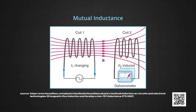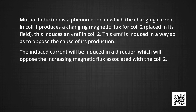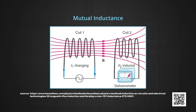An electric current can be induced in a coil by flux change produced by another coil in its vicinity. This is called mutual inductance. Mutual induction is a phenomenon in which changing current in coil 1 produces a changing magnetic flux in coil 2 placed in its field, which induces an EMF in coil 2. This EMF is induced in a way so as to oppose the cause of its production. The induced current will be induced in a direction which will oppose the increasing magnetic flux associated with coil 2.